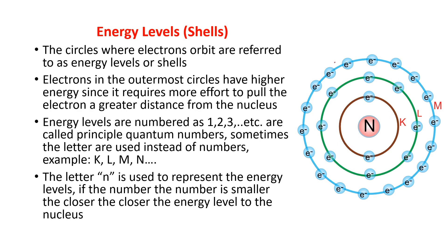Now let us discuss energy levels. You can call these energy levels as shells or energy shells. Looking at this diagram of an atom, you can see the nucleus in the center. Around the nucleus are circular parts known as shells or energy levels. We represent these with designation letters K, L, M, N, O, and so on, or with numbers 1, 2, 3, 4, and so on. The electrons in the outermost circle have the highest energy since it requires more effort to pull electrons a greater distance from the nucleus.